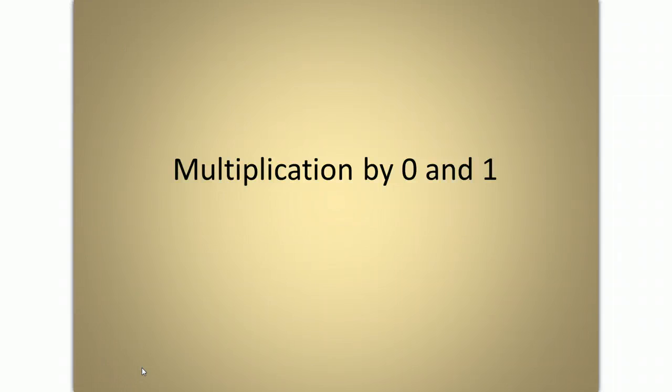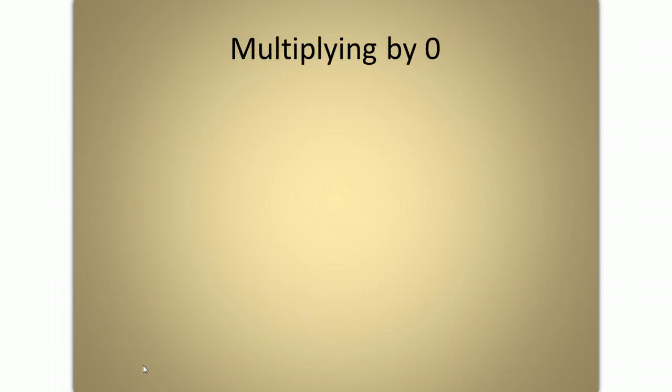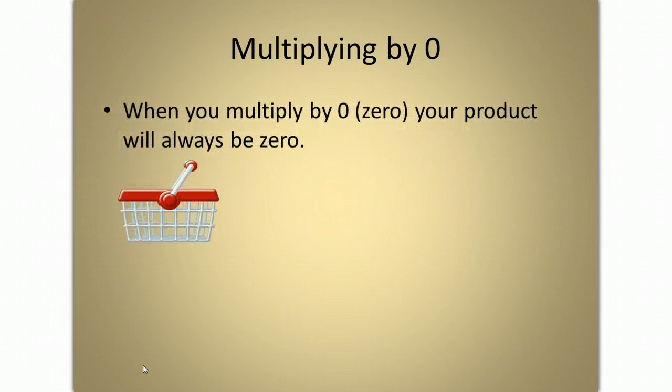Multiplication by 0 and 1 by Christina Mullican. Multiplying by 0. When you multiply by 0, your product will always be 0. That is because you are essentially multiplying the other number by nothing.